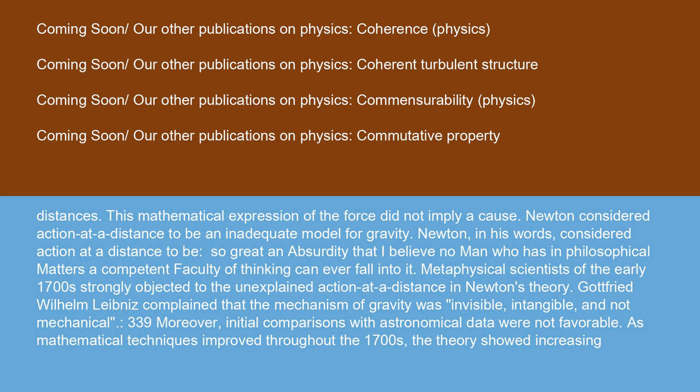Newton considered action at a distance to be an inadequate model for gravity. Newton, in his words, considered action at a distance to be "so great an absurdity that I believe no man who has in philosophical matters a competent faculty of thinking can ever fall into it."